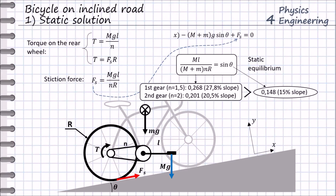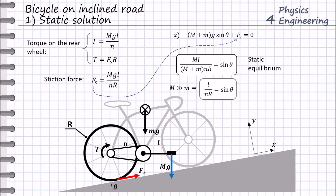Both values are higher than the 15% slope in the problem boundaries. Interestingly, if we consider that the mass of the cyclist is much higher than the mass of the bike, we can obtain a simplified equation for static equilibrium, where this condition does not depend on the mass of the cyclist. But of course this is only valid for the static condition and does not consider any dynamic effects during riding.